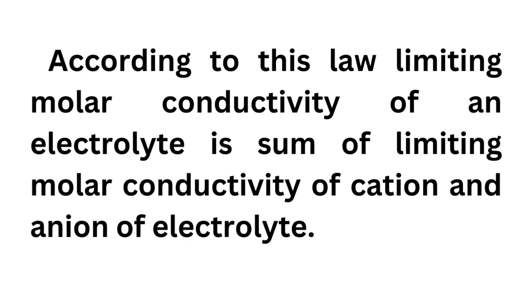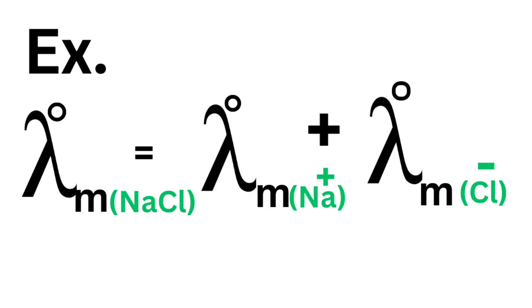Limiting molar conductivity of an electrolyte is sum of limiting molar conductivity of cation and anion of electrolyte. Means limiting molar conductivity of electrolyte is sum of cation and anion values. Thank you.